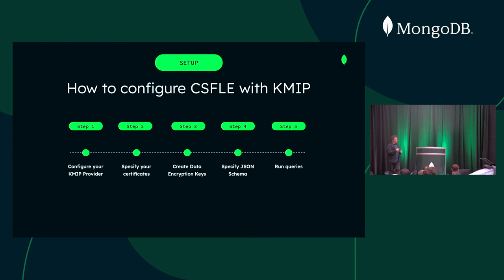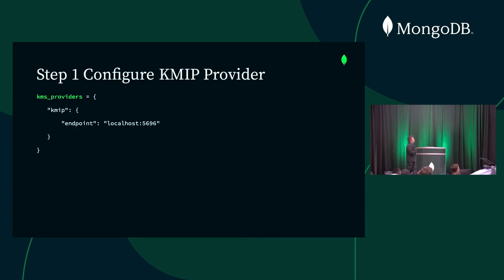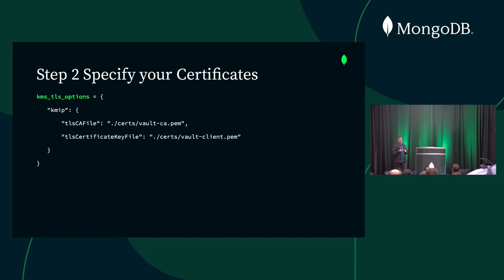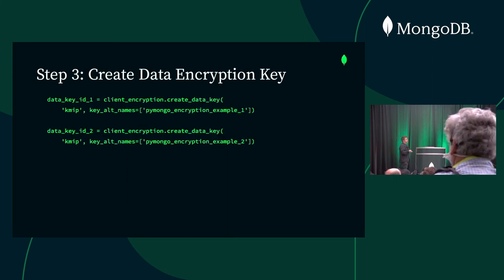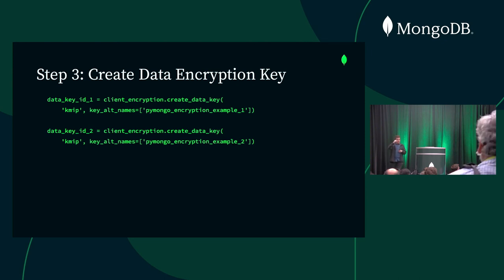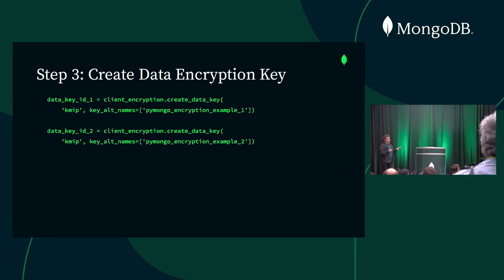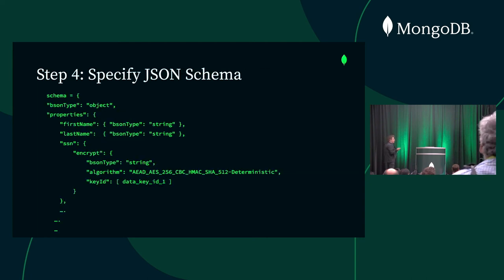In my case I'm using a HashiCorp Vault server running locally — you'd typically run this in a VM or in the cloud. I'm specifying the certificates needed to authenticate against the KMIP server. Then I create the encryption keys, which are stored in a MongoDB collection. Those encryption keys are encrypted by the envelope key — so the collection I create when I do 'create data key' is a MongoDB collection, but the keys are protected by the envelope key.